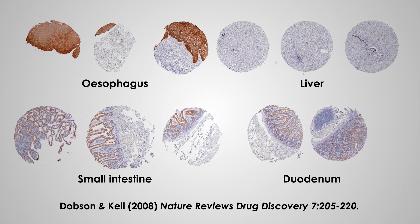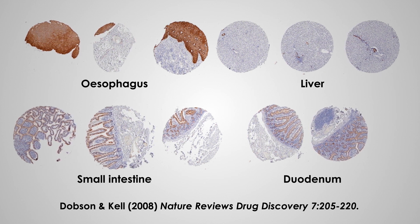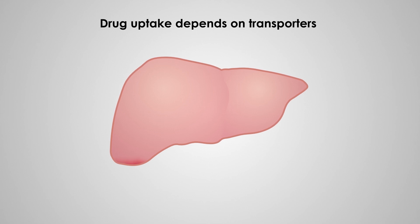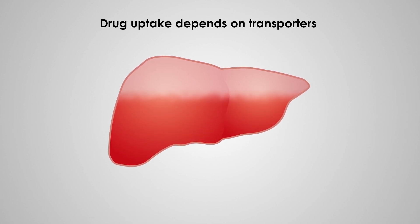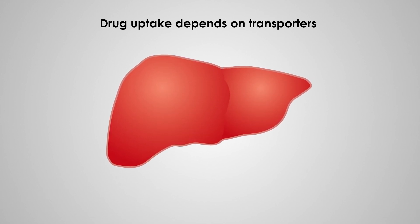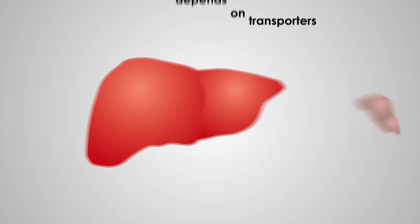There are two main reasons why drugs fail in development. Drug doses are measured at the organ level but don't account for the details of drug uptake. Take the liver, for example — drug uptake into all cells of liver 1 is homogeneous.